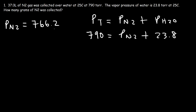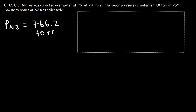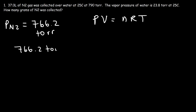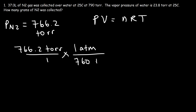That gives 766.2 Torr. Now that we have the partial pressure of N2, we can use the ideal gas law equation PV = nRT to calculate the moles of N2. We need to convert Torr to ATM by dividing by 760, so 766.2 divided by 760 is about 1.008 ATM.